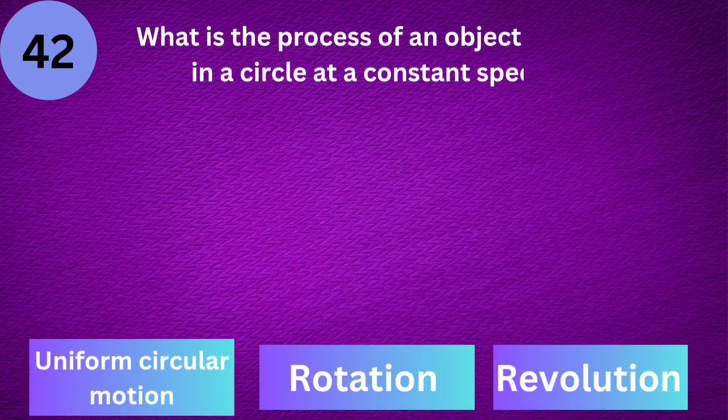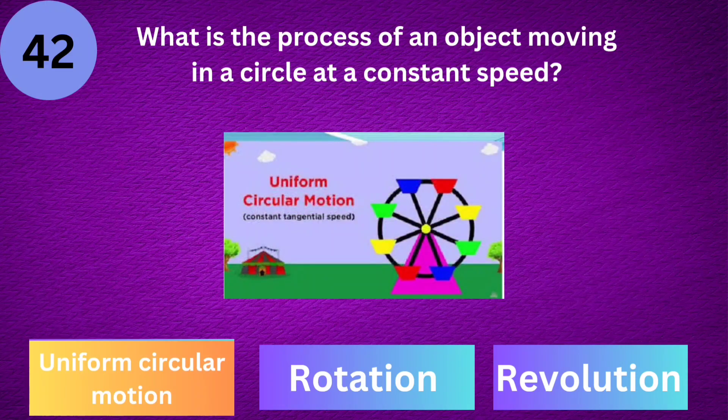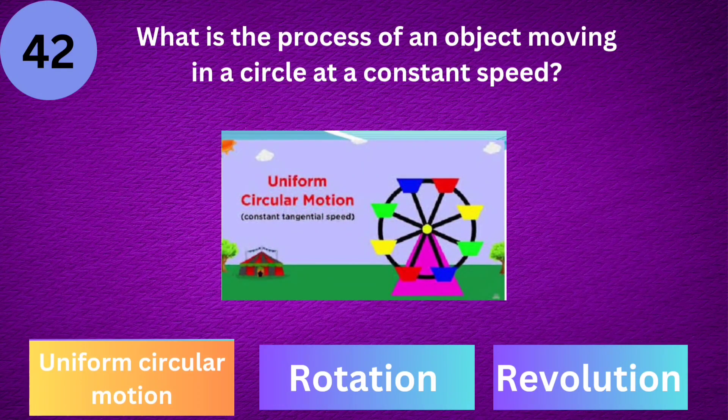What is the process of an object moving in a circle at a constant speed? Uniform circular motion.